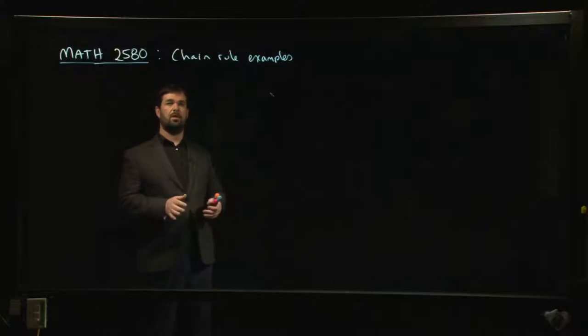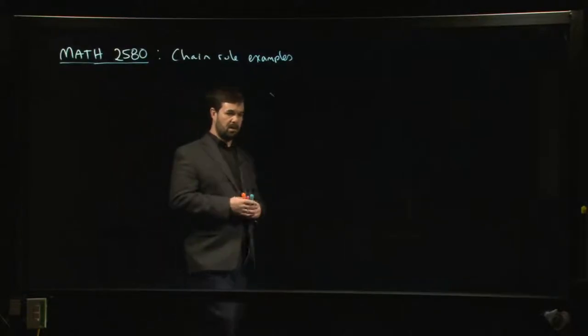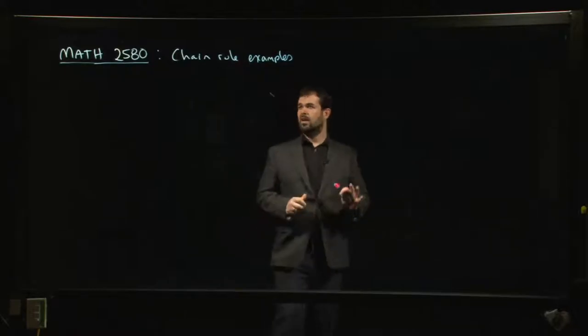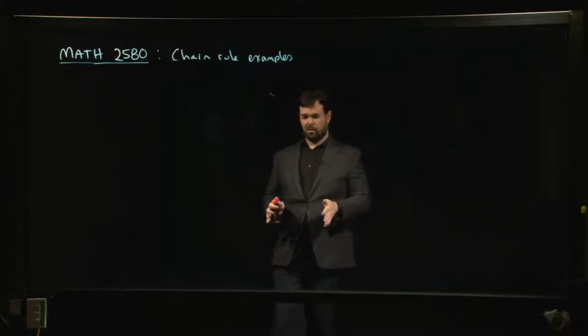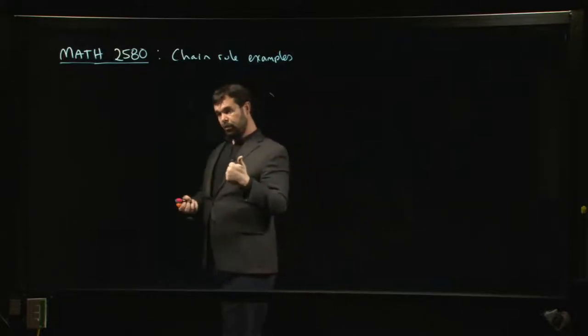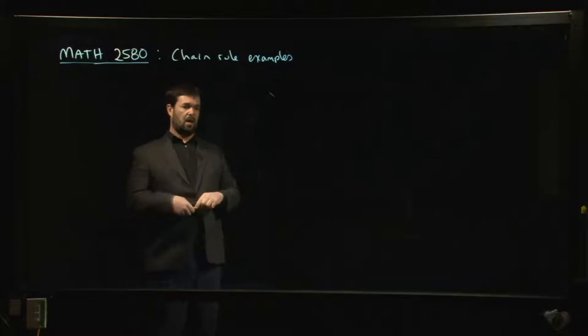Alright, so we're continuing with videos for MATH 2580, Calc 4. These are our week three installments. I want to do a few more examples with chain rule and then we're going to move on to some of the consequences of the chain rule including implicit differentiation and tangent planes for level surfaces. But first let's do some examples, make sure we know how chain rule works.